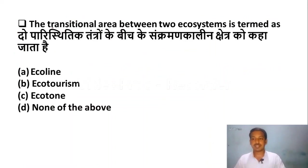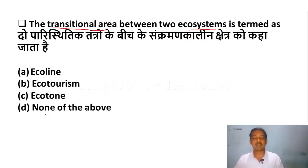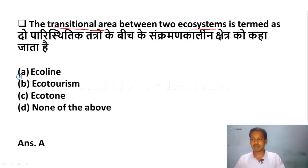The next question is: the transitional area between ecosystems is termed as — Option A: Ecoline, Option B: Ecotourism, Option C: Ecotune, Option D: none of the above. The transitional area between one ecosystem and another ecosystem is termed as Ecoline. So Option A, Ecoline, is the correct answer.